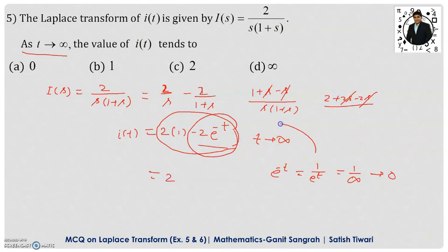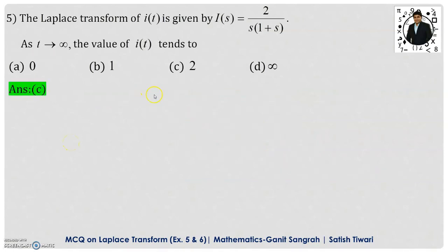We are left with 2 only when t tending to infinity. So if you observe the options, option C is the correct option.